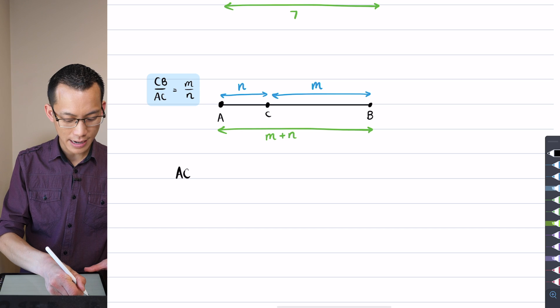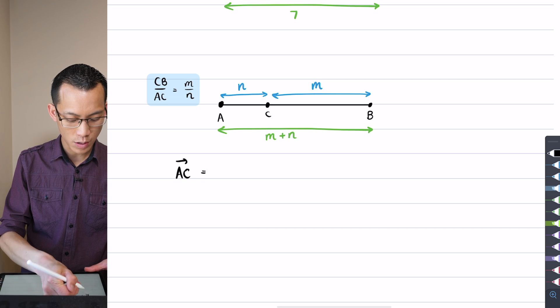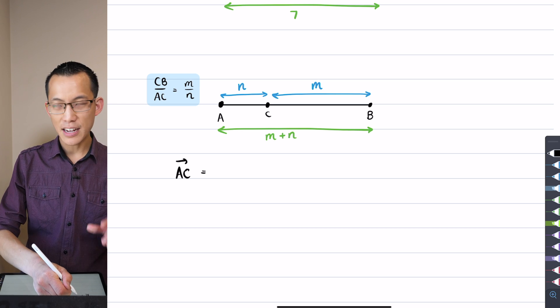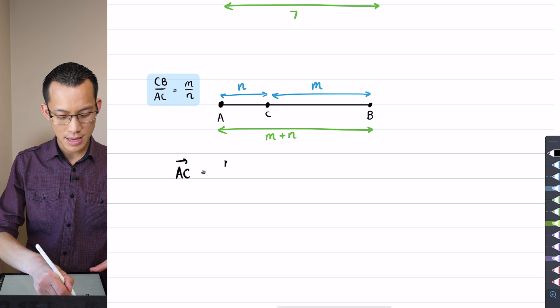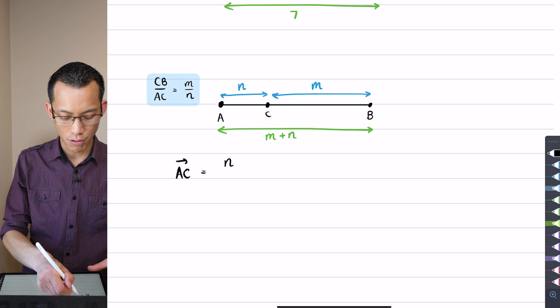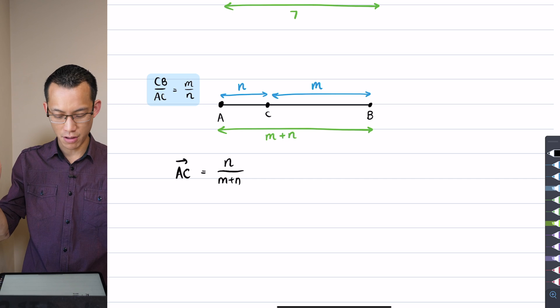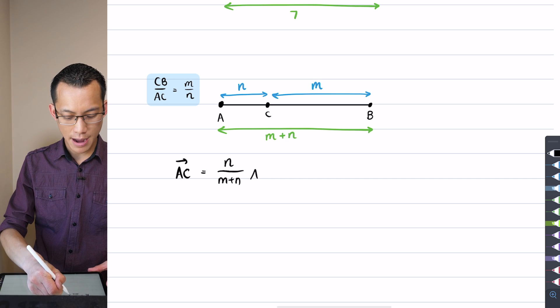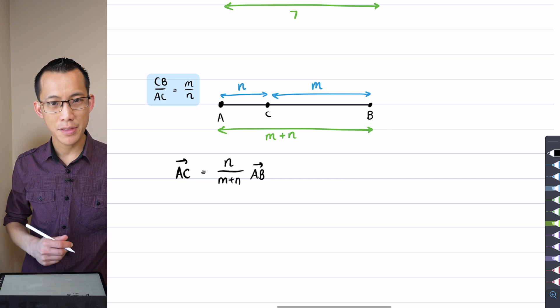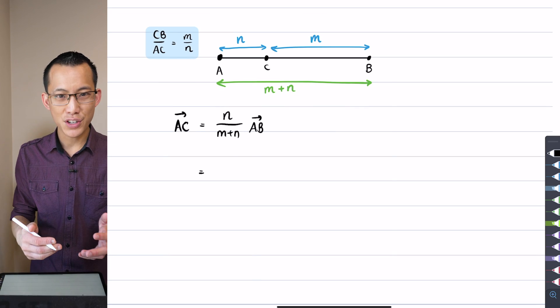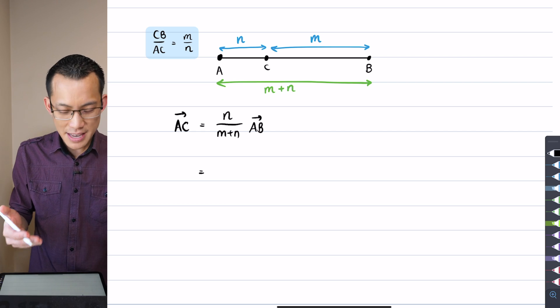Now the reason why this is useful is because now I can say I can go directly to saying AC is equal to this thing related to the whole AB vector. It's going to be instead of 2 over 7, it's this length, which was the 2, over this length, which was the 7 before, the entire interval multiplied by AB. Do you agree with that? Like it's that proportion of the entire interval.